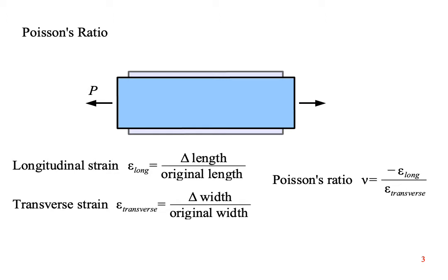We know from Chapter 2 that the longitudinal strain is the change in length divided by the initial length. Longitudinal strain is also called axial strain because it occurs along the long axis of the part. Transverse strain is the change in width divided by the initial width.